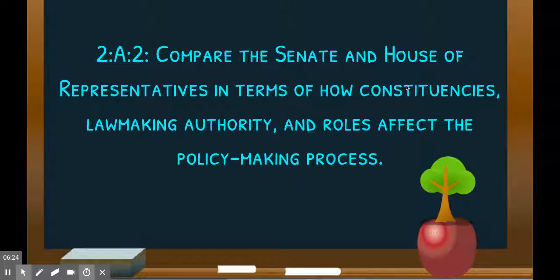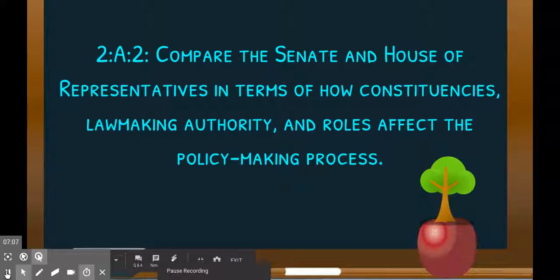That video really goes into 2A2 — comparing the Senate and the House of Representatives in terms of how constituencies, lawmaking authority, and roles affect the policy-making process. You have to look at the policy-making process. Constituencies are the people who voted them into office. You also look at the authority they have in passing legislation. The Senate and the House are different for very different reasons, in terms of creating a balance.